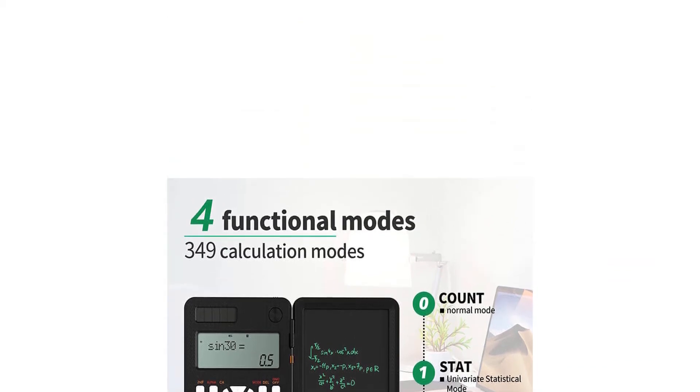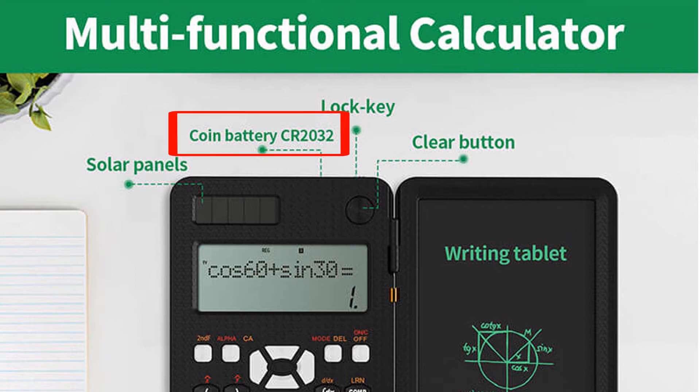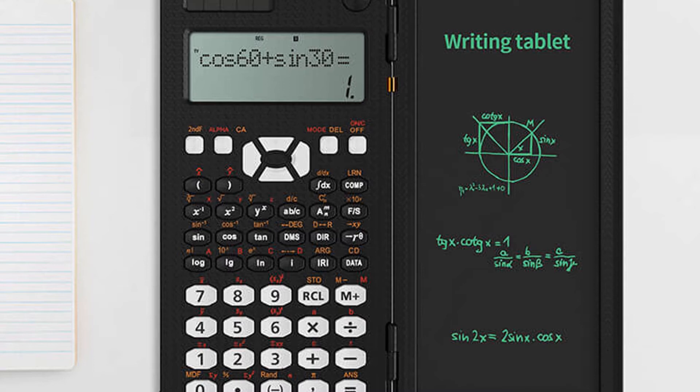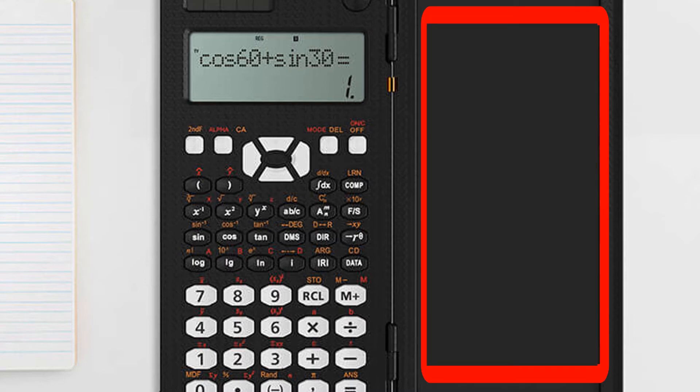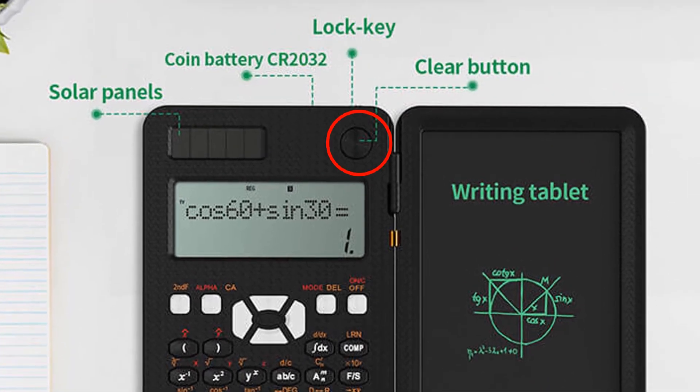On top of the calculator we have the solar panel and it also uses a battery, and the battery type is coin battery CR2032. Then it also has a clear button and what this clear button does is it clears the writing content on the tablet screen. So if you write something on the screen and you want to erase it, then all you have to do is tap on this clear button then everything will disappear.